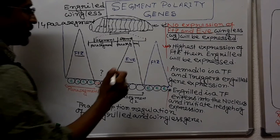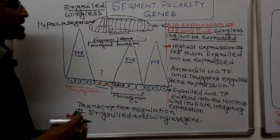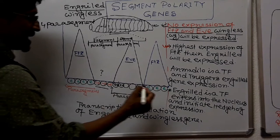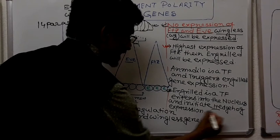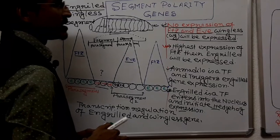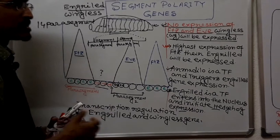Next we will see how this expression occurs — how signaling occurs in the case of fushi tarazu, wingless, and patched receptor, and the role of armadillo. Armadillo is the homolog of beta-catenin. Engrailed is a transcription factor that enters the nucleus and initiates hedgehog expression. Armadillo is a transcription factor that triggers engrailed gene expression.